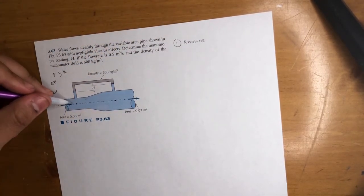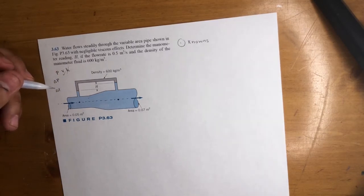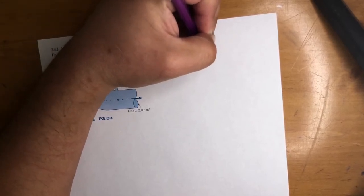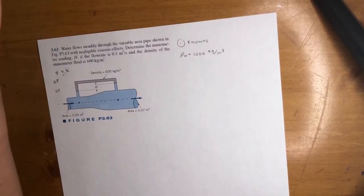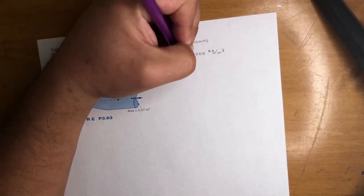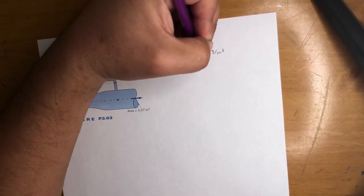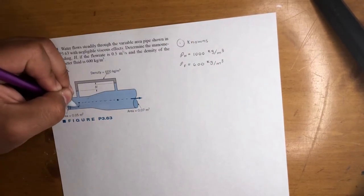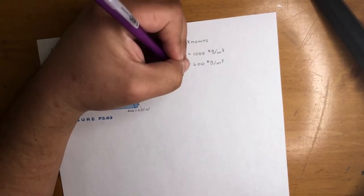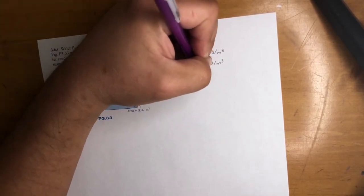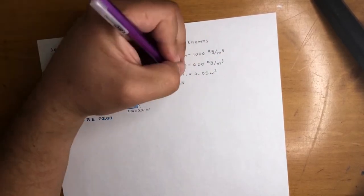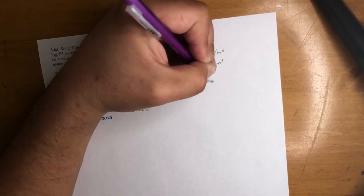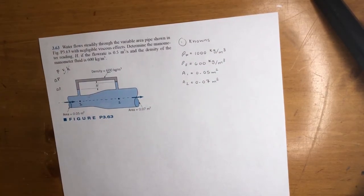So we're dealing with water and some fluid. We got density of water is equal to 1,000 kilograms per meter cubed. They give us the density of the fluid - that's 600 right here - 600 kilograms per meter cubed. What else? They give us the areas: A1 is equal to 0.05 meters squared, A2 is equal to 0.07 meters squared.